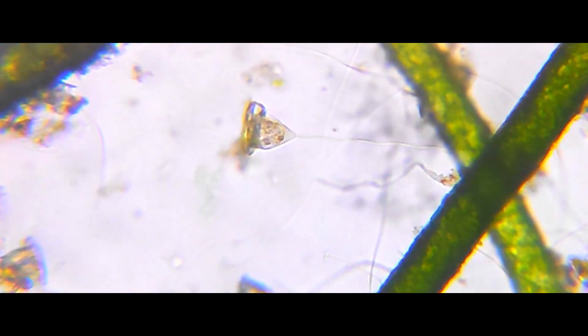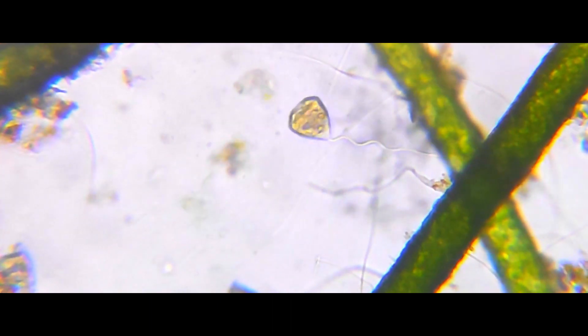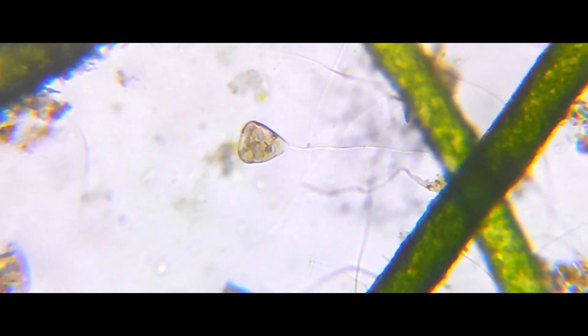You might have observed that these vorticella creatures like to jump around. This usually happens when something touches them, and this is likely a protective measure that evolution sorted out for the species.